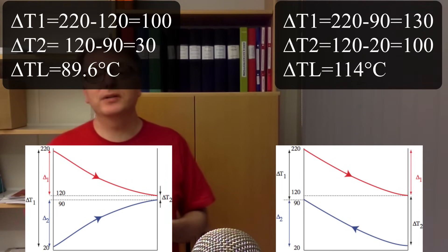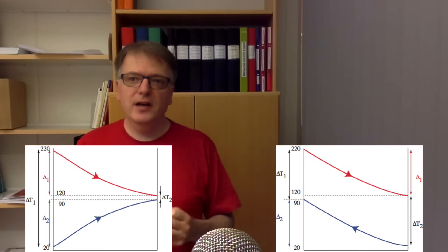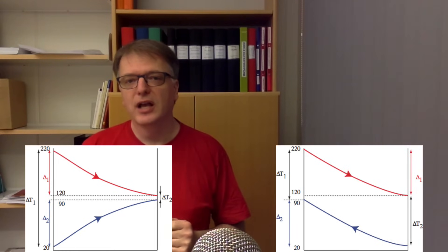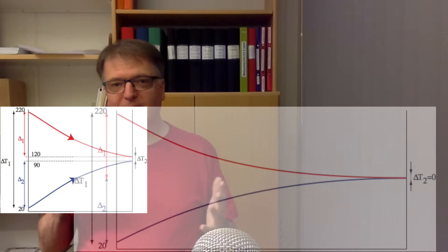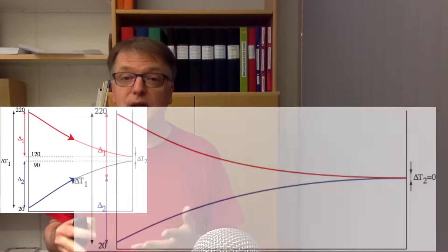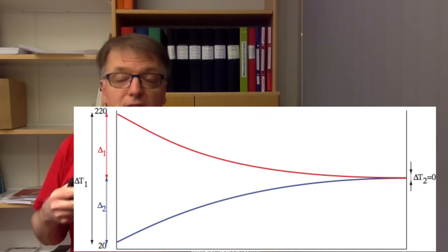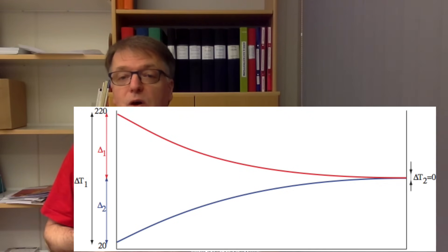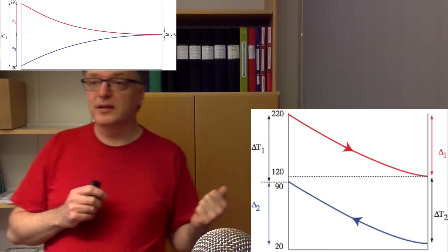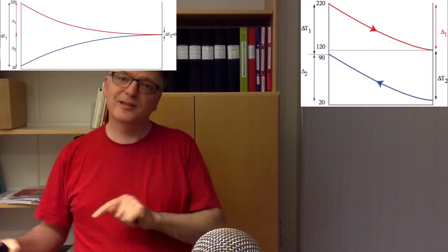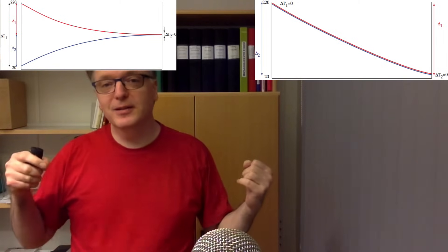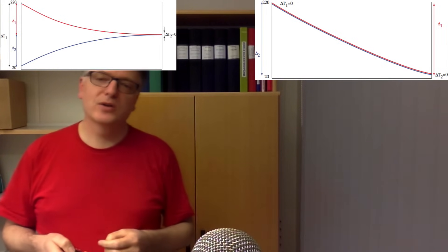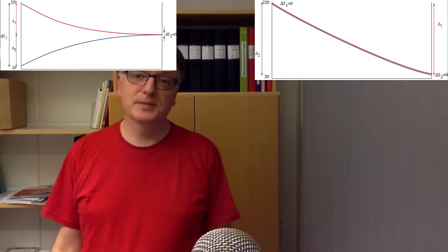The counter-current setup is much better. You can also think about the limiting case with an infinitely large heat exchanger. In a co-current setup, the limit is when ΔT₂ reaches zero — the outgoing hot medium reaches the same temperature as the outgoing cold medium. But in the counter-current setup with an infinitely long exchanger, you could theoretically heat the cold medium all the way up to 220°C. That limit is much higher, which is another reason counter-current is preferred in most cases.